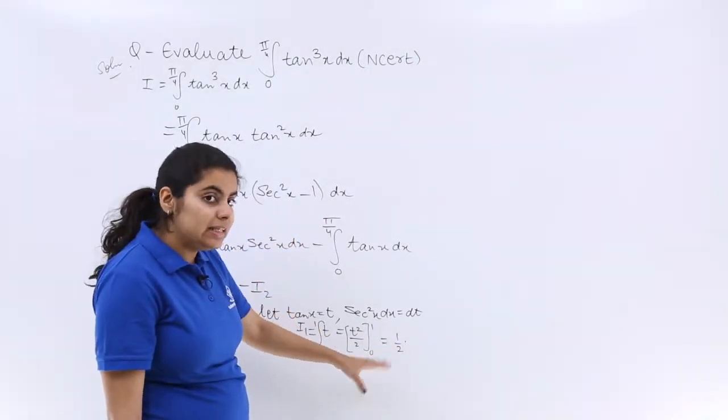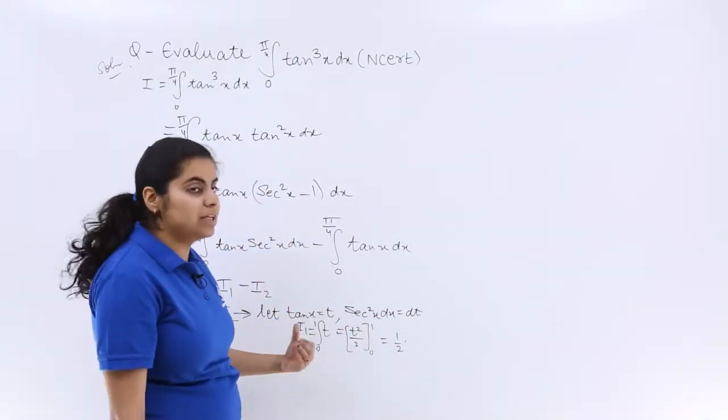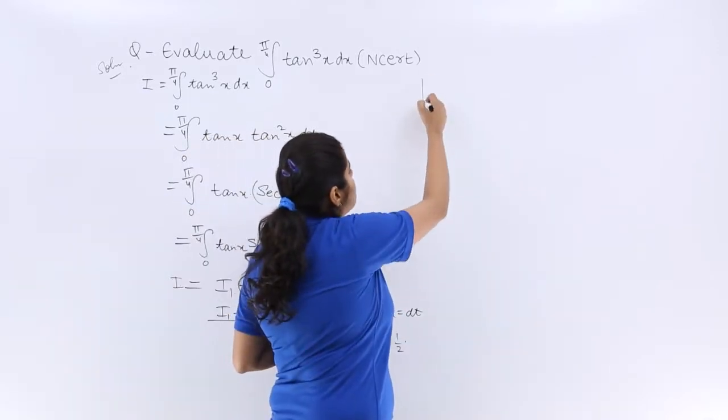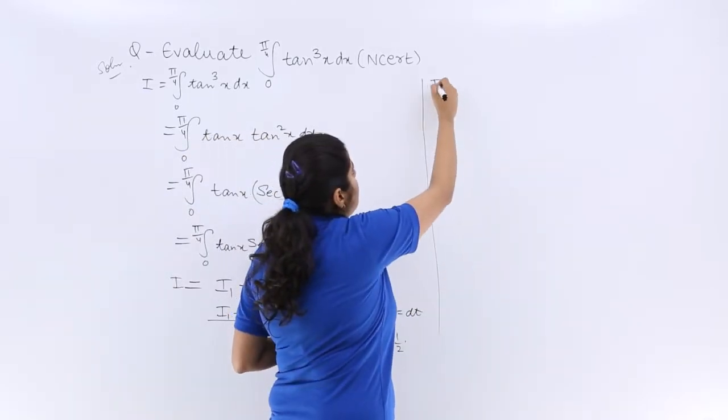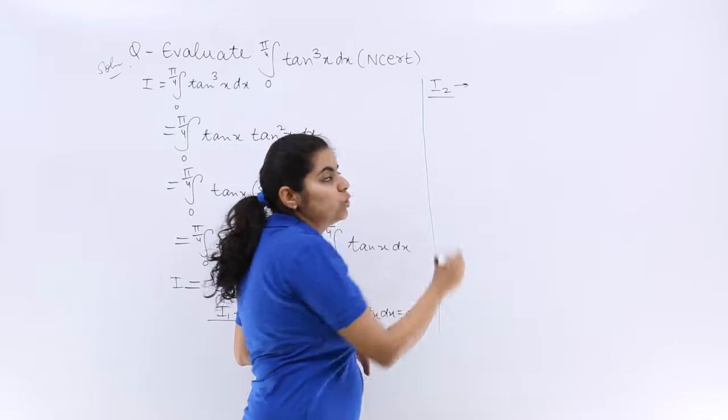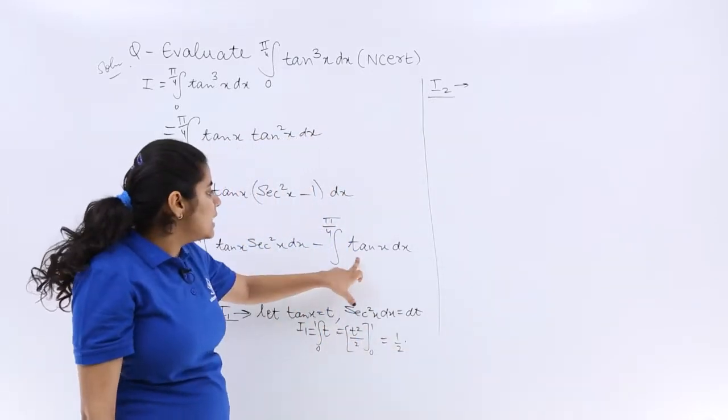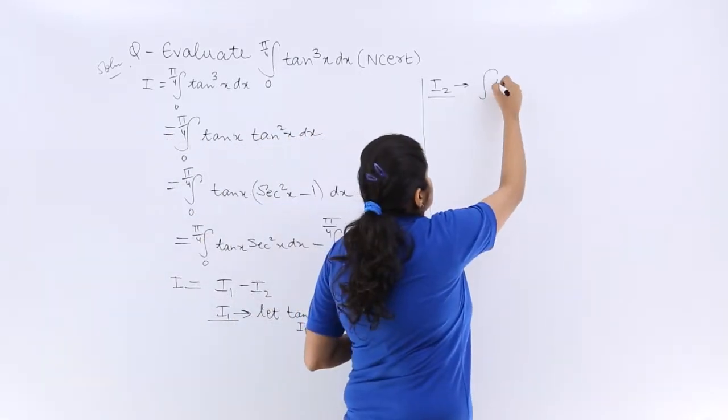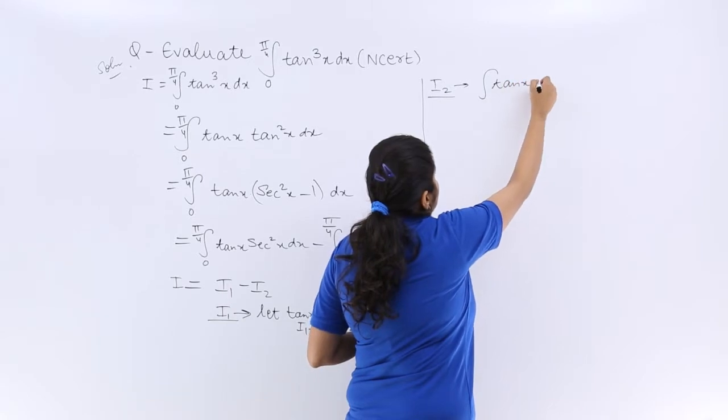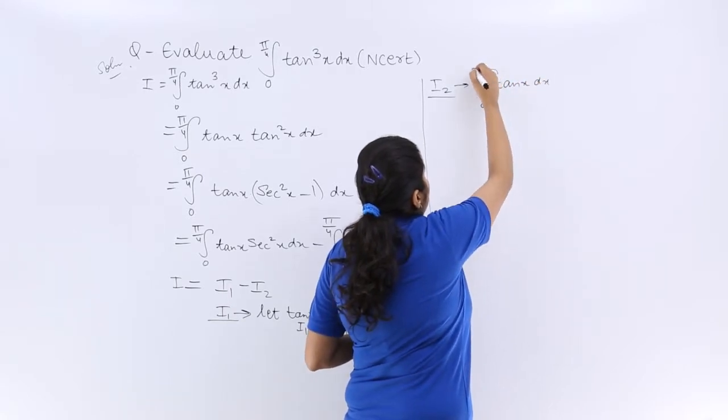Next, I know that I₁ has been evaluated, but my question is still not complete because I am left with my I₂. Let me write I₂ again. It is ∫₀^(π/4) tanx dx.